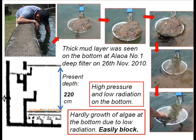We rinsed this bottom mat — there was a small biomass of filamentous algae. In this deep filter, there is high pressure and low radiation at the bottom. Hardly any algae growth at the bottom was observed. This deep filter may be easily blocked by mud.